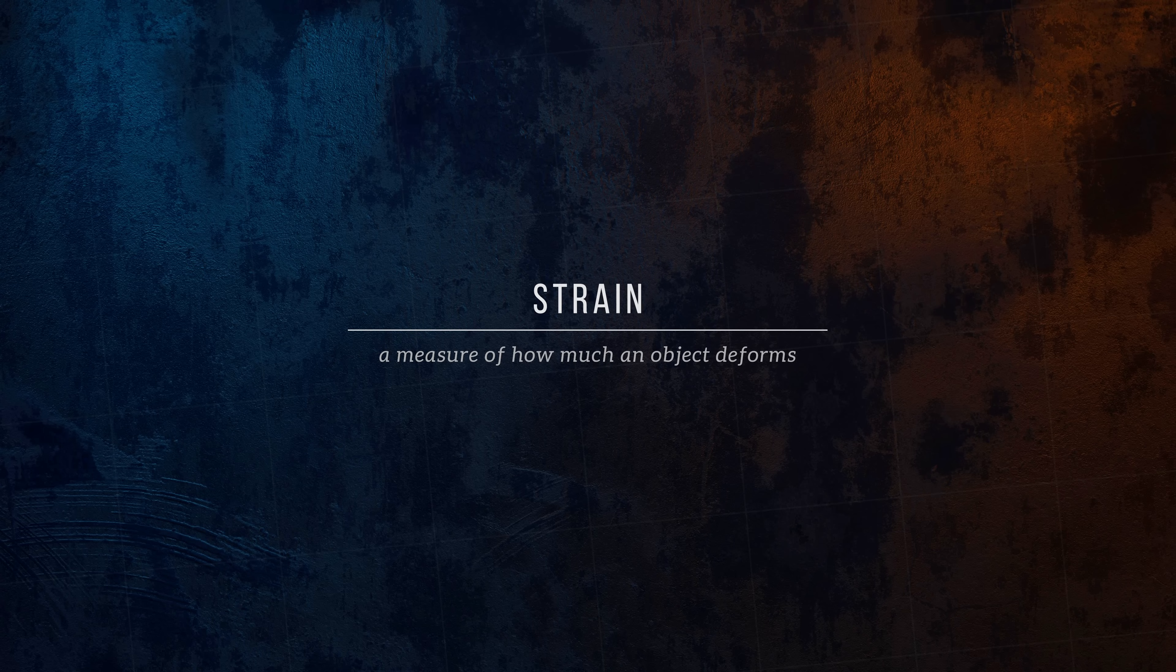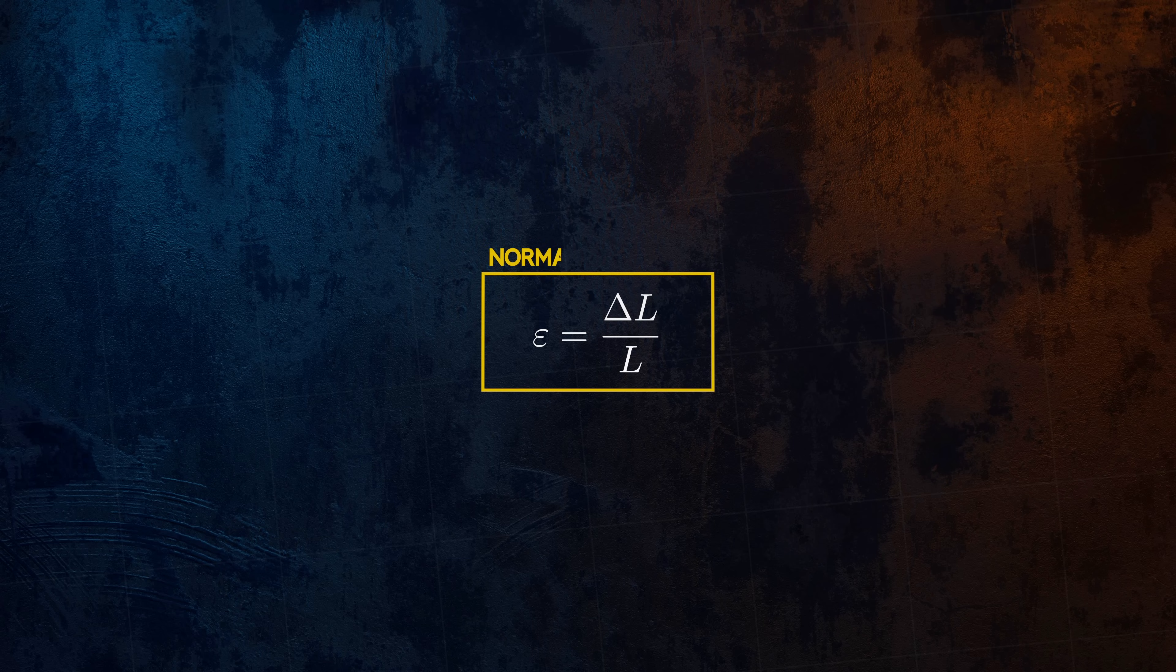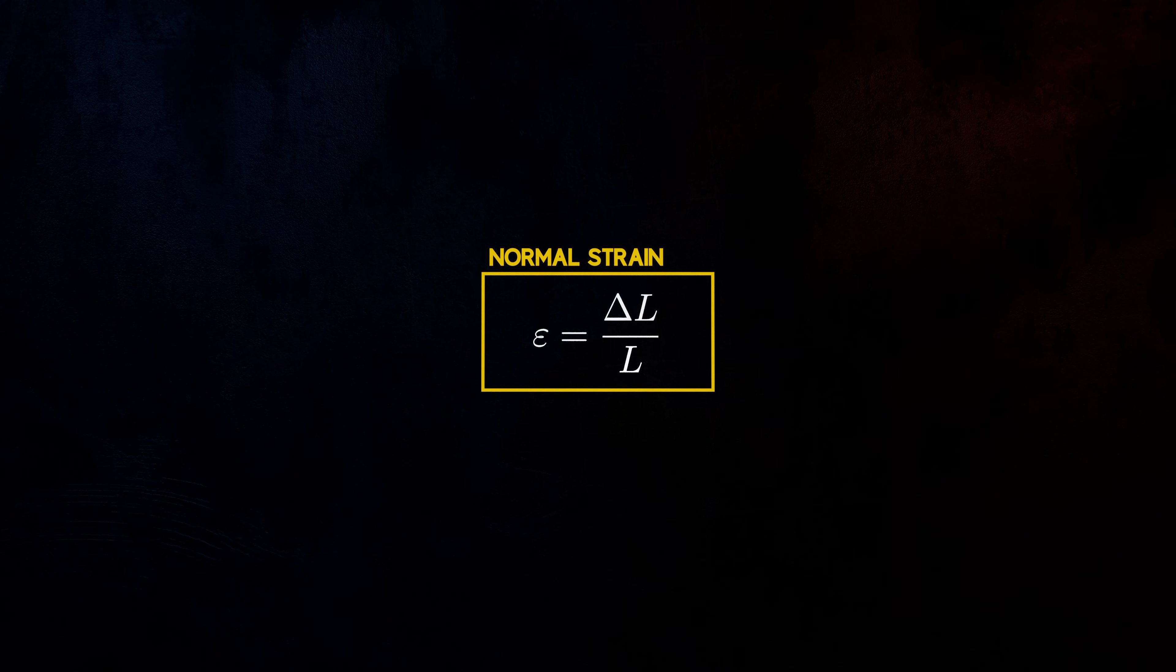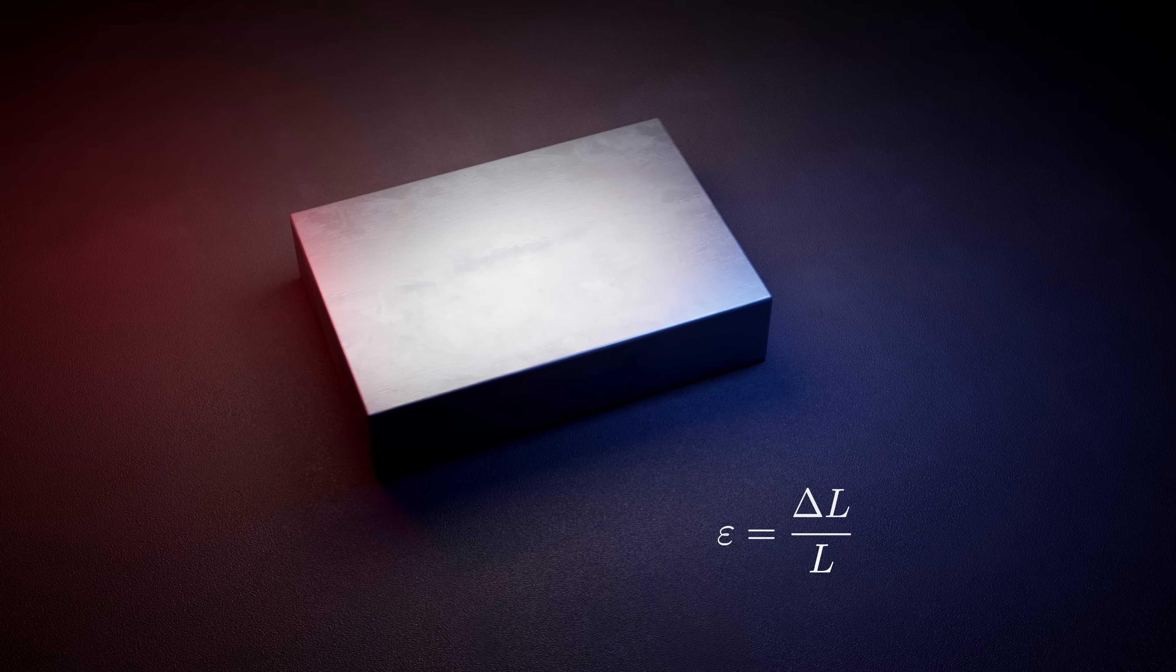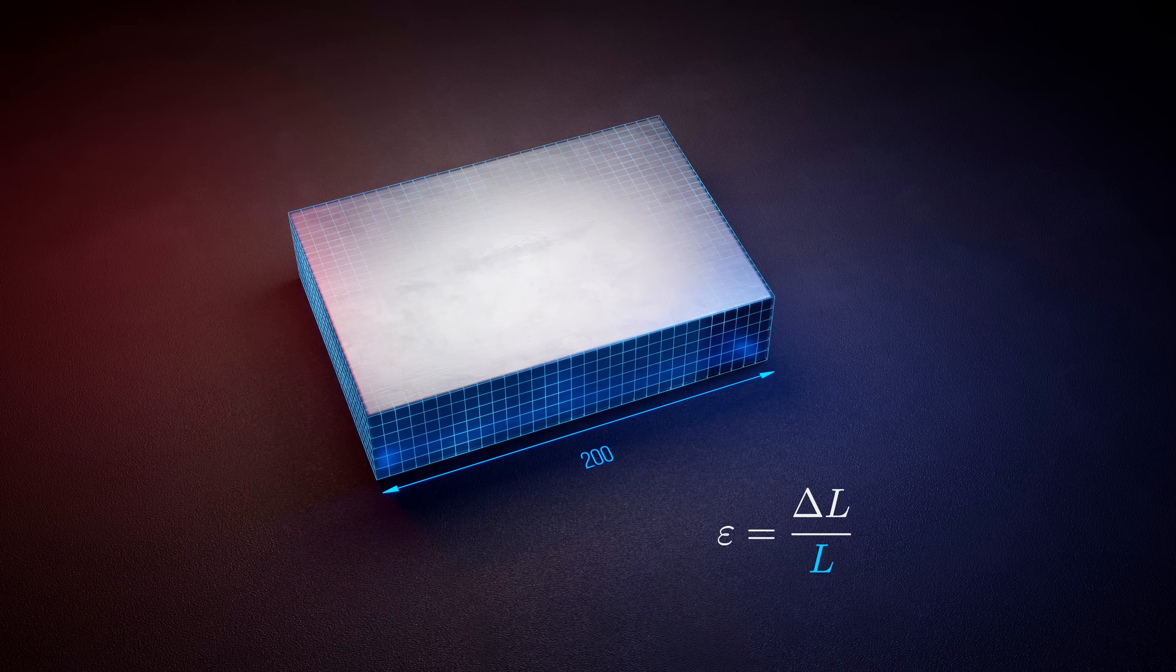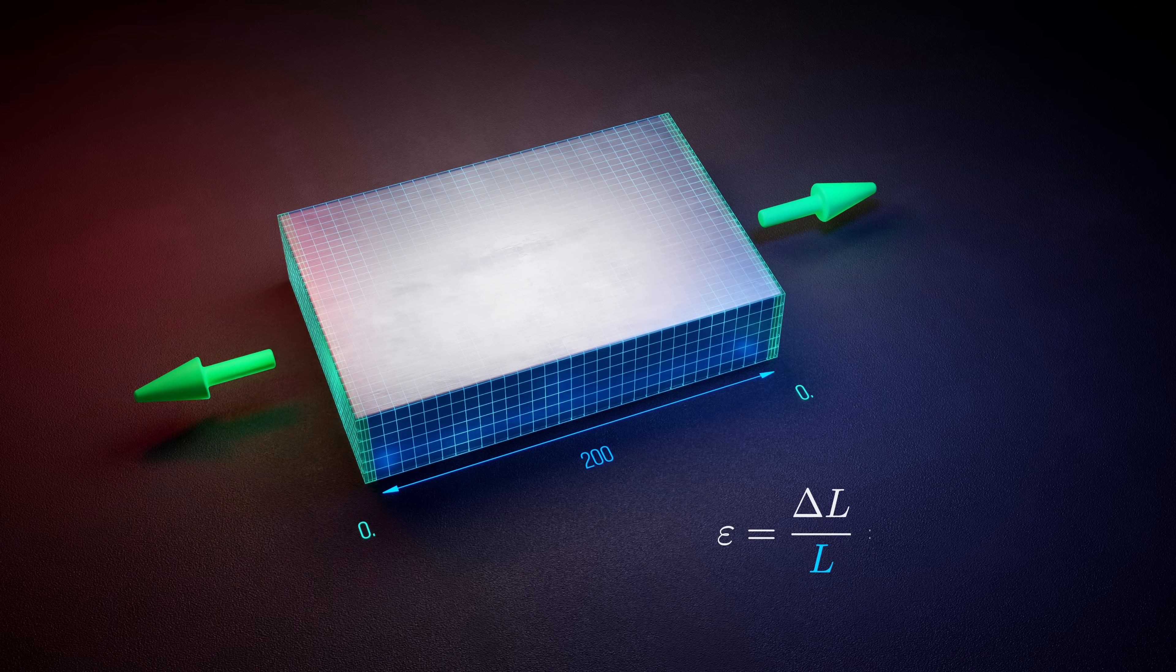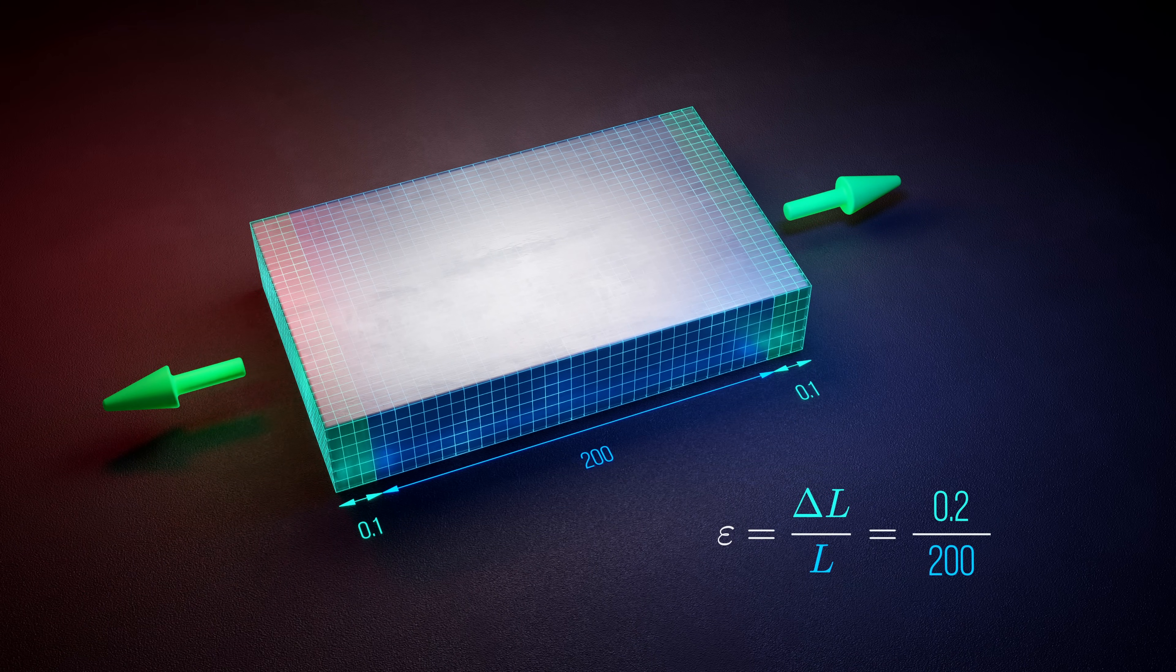It's calculated by dividing a change in length, delta L, by the original length of the object, L. Here's an example. Imagine a steel block that's initially 200 mm in length. If it's subjected to a uniaxial load that stretches it by 0.2 mm, the strain is 0.001, or 0.1%.